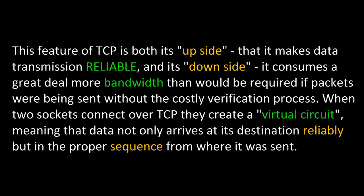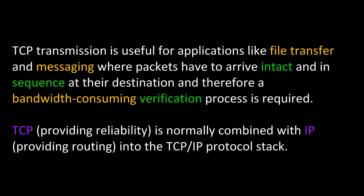When two sockets connect over TCP, they create a virtual circuit, meaning that data not only arrives at its destination reliably, but in the proper sequence from where it was sent. TCP transmission is useful for applications like file transfer and messaging, where packets have to arrive intact and in sequence at their destination, and therefore a bandwidth-consuming verification process is required. TCP, providing reliability, is normally combined with IP, providing routing, into the TCP/IP protocol stack.